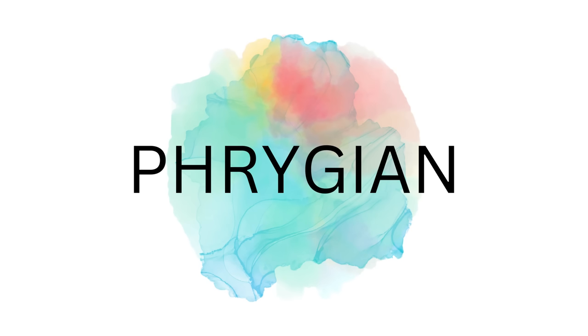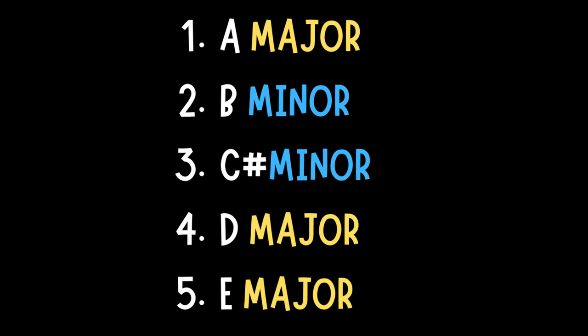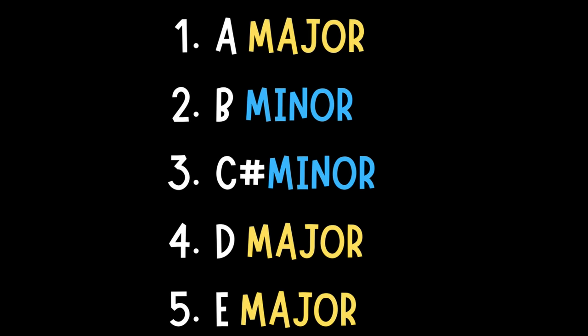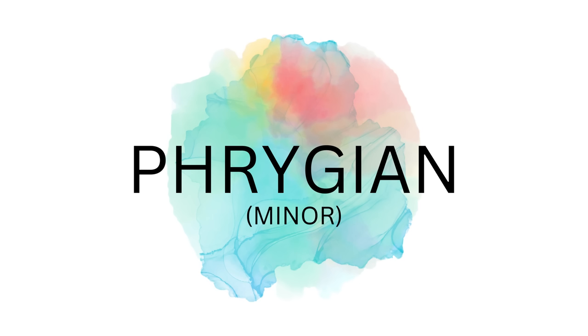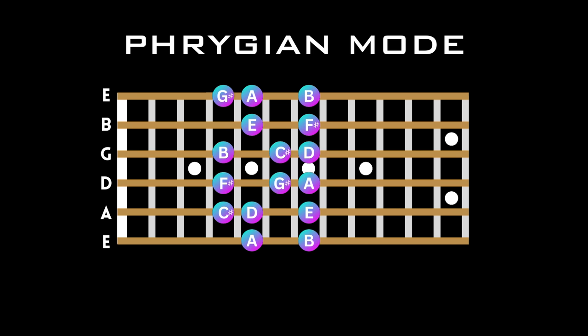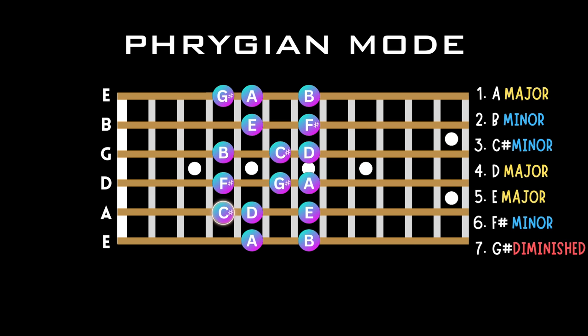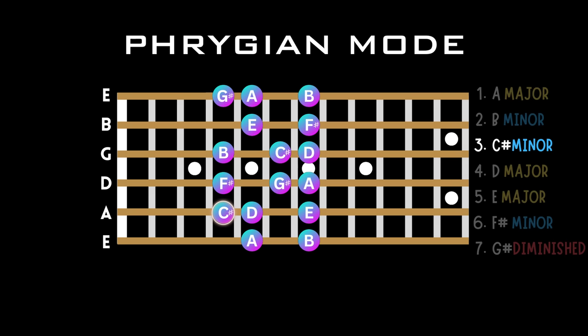The next mode is referred to as the Phrygian mode, which is played over the three chord, and in the key of A, that would give us a C sharp minor chord. This tells us the tonality of this mode is minor. To play the Phrygian mode, you simply need to treat the third note in the scale as your new root note, and in the context of the chord it's meant to be played over — in this case C sharp minor — it would sound like this.